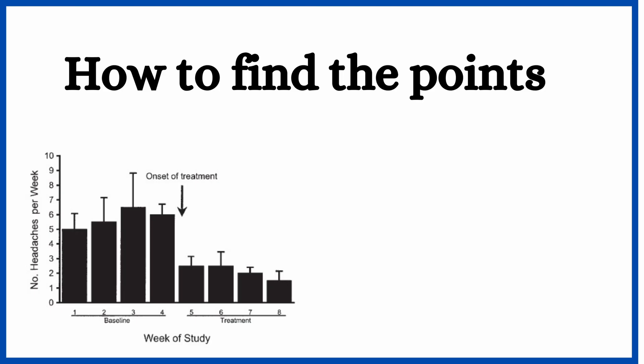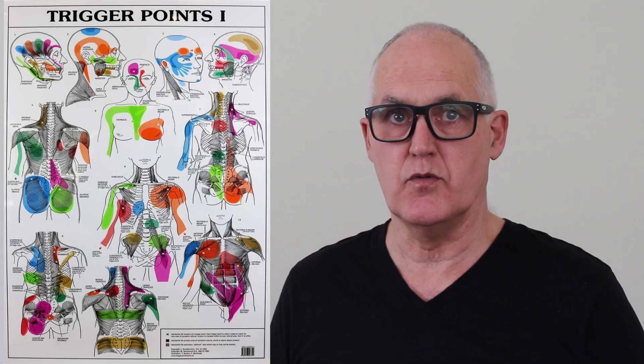Scientists found that there are tender lumps within tight bands of muscle that shoot pain when you press them, so we use that to find them. We have charts like these to help identify which could be involved — basically showing us where to look.